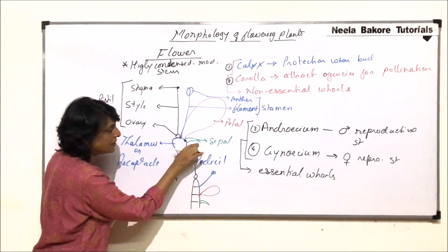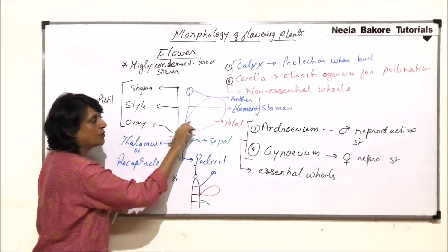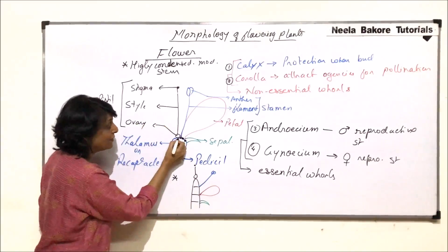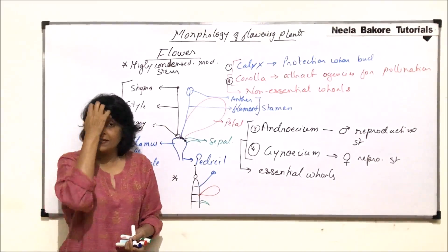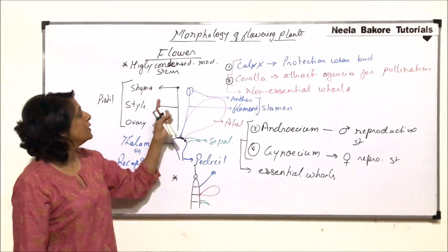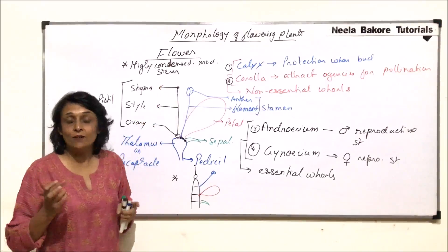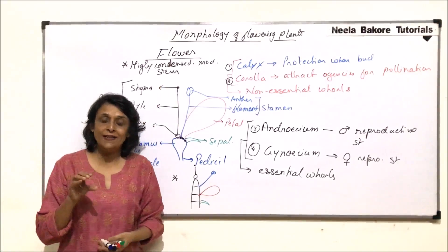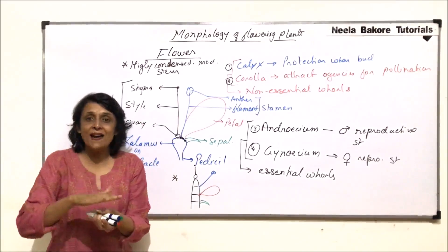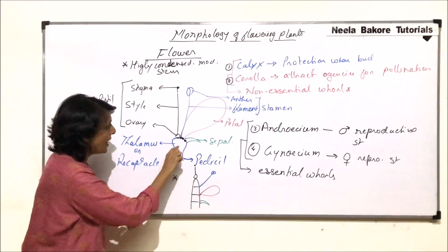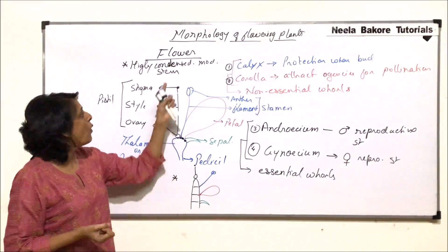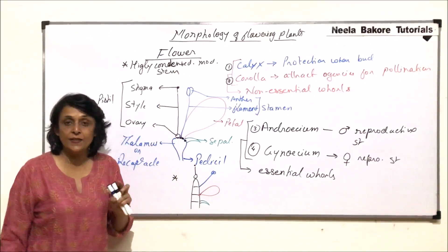From one node, we see the sepals arising. From the second node, we see the petals. Third node, we see androecium. And from the apical point, that is the terminal point, we see the gynoecium. And that is why we call the flower as a modified stem. It is highly condensed. Instead of a long structure, it is a compact structure. And that is why this thalamus or receptacle has become little flattened. And all these floral whorls are arranged on this.